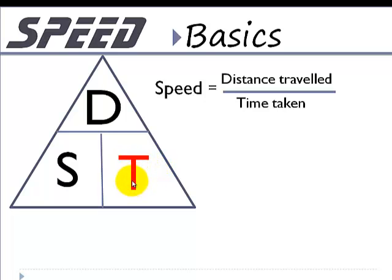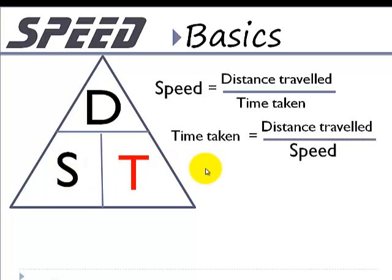To find time, time is equal to distance — given by d on top — over speed, shown by s below. So time is given by distance travelled over speed.